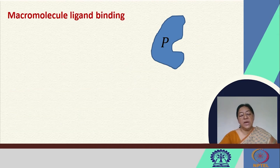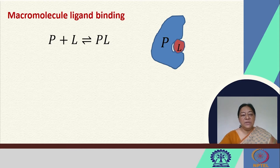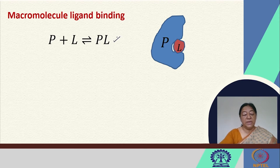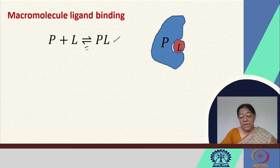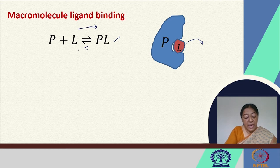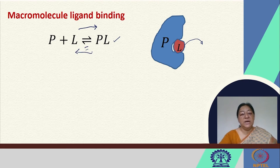If we understand that a ligand is bound in the active site, by the law of mass action, we can say that in a one-to-one stoichiometry, the protein and ligand interact to form the protein-ligand complex. This is an equilibrium situation where the ligand may also become unbound from the complex, resulting in association and dissociation.